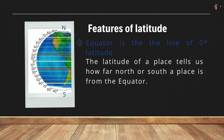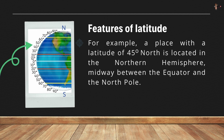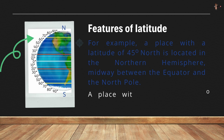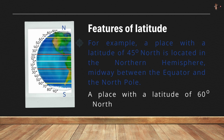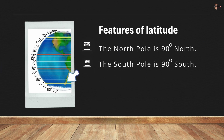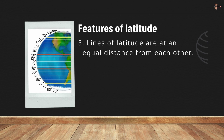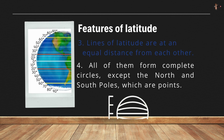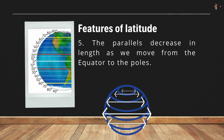The latitude of a place tells us how far north or south a place is from the equator. For example, a place with a latitude of 45 degrees north is located in the northern hemisphere midway between the equator and the north pole. A place with a latitude of 60 degrees north is further north. The north pole is 90 degrees north and the south pole is 90 degrees south. Lines of latitude are at an equal distance from each other. All of them form complete circles, except the north and south poles which are points. The parallels decrease in length as we move from the equator to the poles.